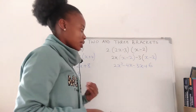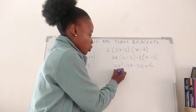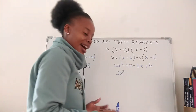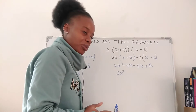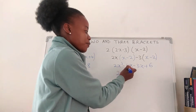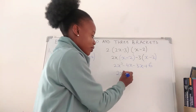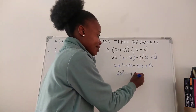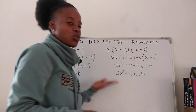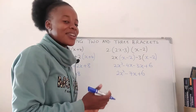After that we can now collect like terms. So we're going to have 2x squared, and then negative 4x minus 3x — we're going to have negative 7x — plus 6. This is how to remove two brackets.